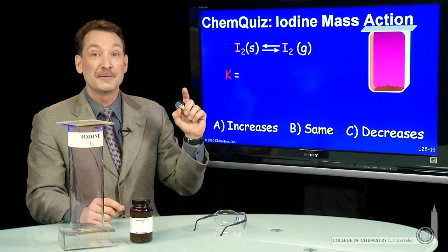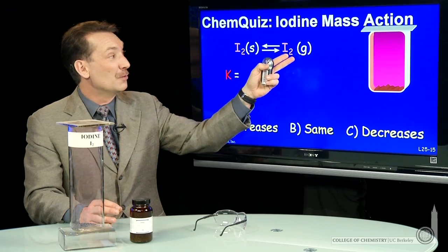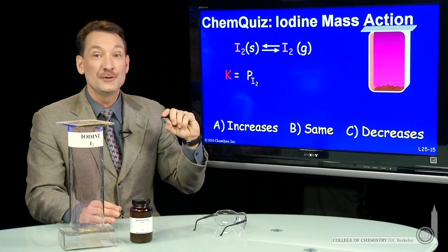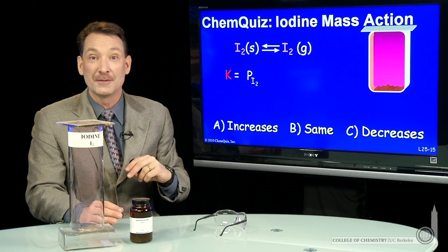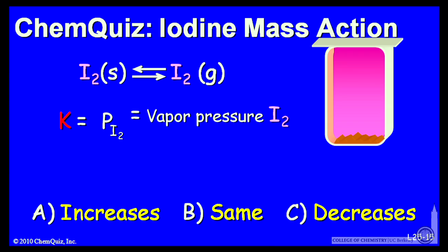Let's look at the equilibrium expression. If we write products over reactants for this, we would have the partial pressure of the I2 gas. I2 solid, that's a pure solid. And pure liquids and solids don't appear in our equilibrium expressions. So it's just K is the partial pressure of I2. At equilibrium, that's the vapor pressure of iodine gas over the solid.